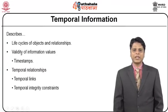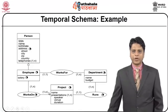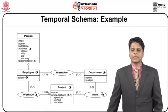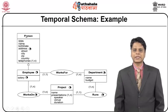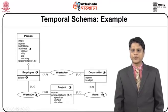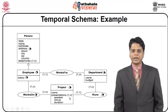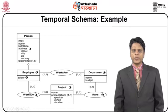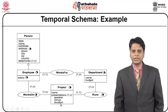Validity of information values like timestamps, temporal relationships like temporal links, and temporal integrity constraints are also associated with temporal information. For example, in a temporal schema, an employee is a person who receives a salary and works for a department. A department has a department name and budget, and runs multiple projects, and an employee works on a specific project. We have a similar schema which represents the temporal relation where the project has a specific duration mentioned and has a life span and life cycle mentioned as part of every relationship.